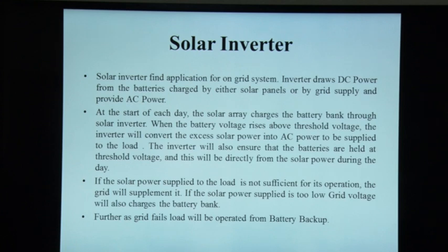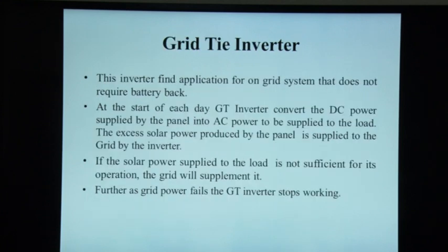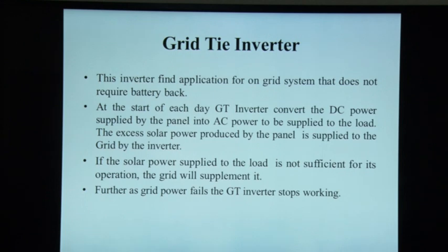A grid-tie inverter is used for on-grid systems that do not require battery backup. At the start of each day, the grid-tie inverter converts DC power from the panel into AC power for the load. Excess solar power is supplied to the grid by the inverter. If solar power is insufficient, the grid supplements it. However, if the grid fails, the grid-tie inverter stops working.